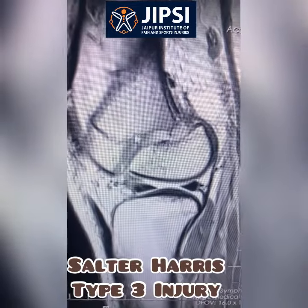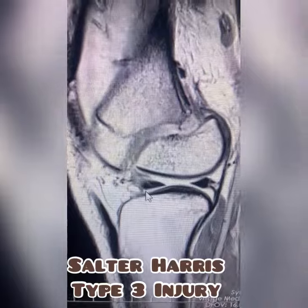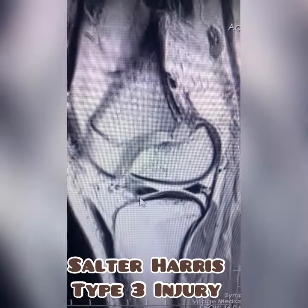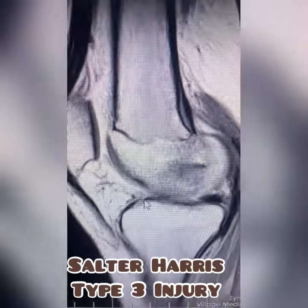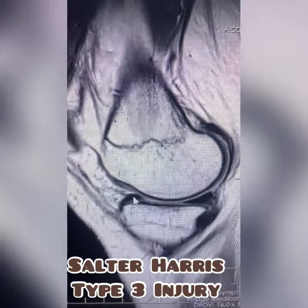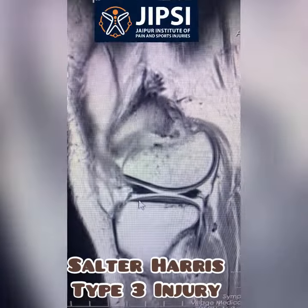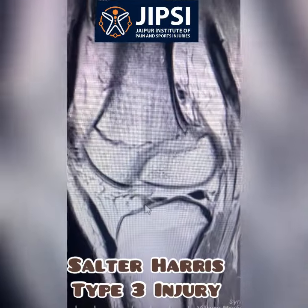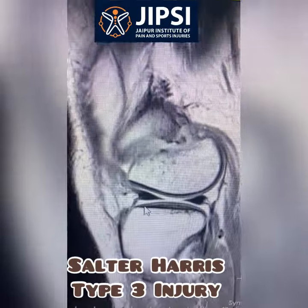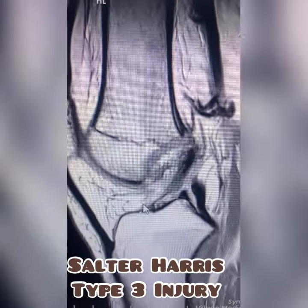That is the fracture. So, Type 3 Salter-Harris fracture. The Salter-Harris classification is used when the epiphysis is not fused — the growth plate is still growing — and that is when we use the Salter-Harris classification. Just a simple case of the day.